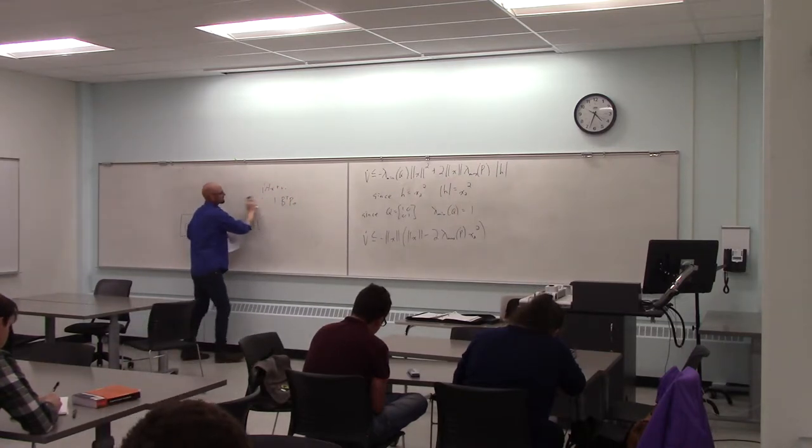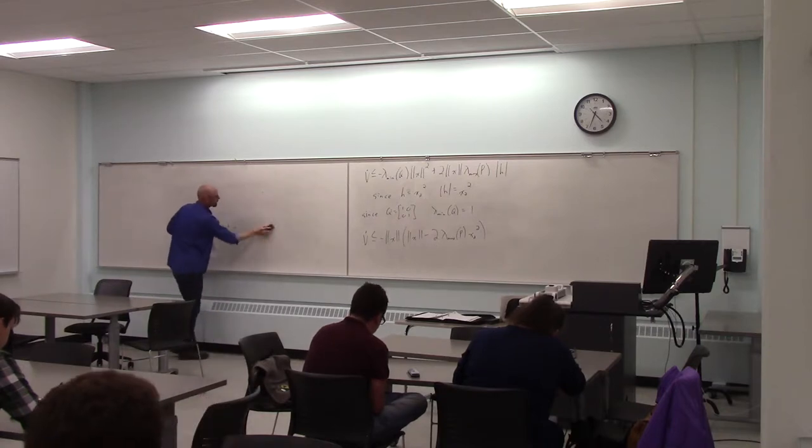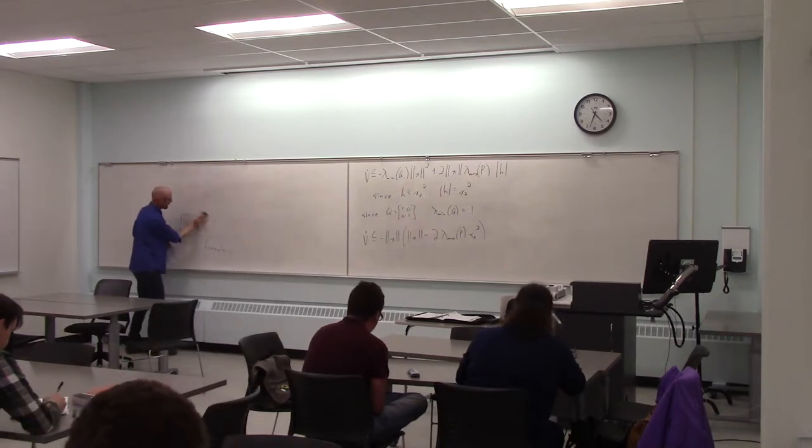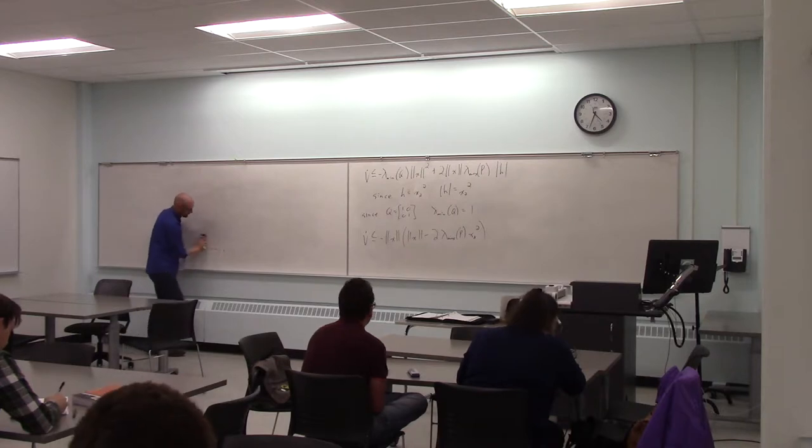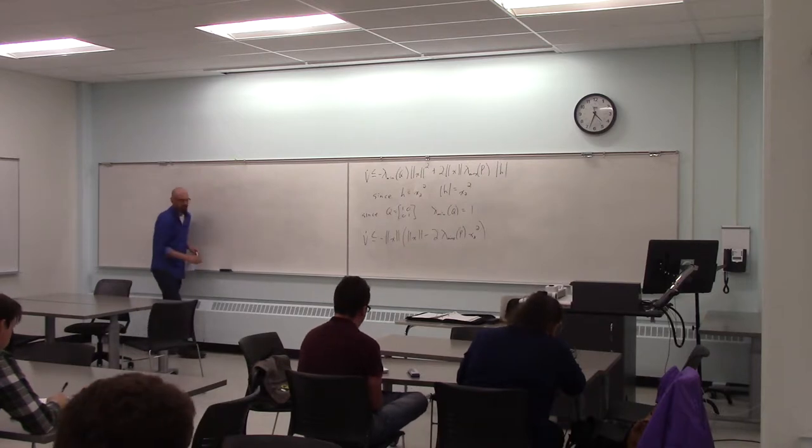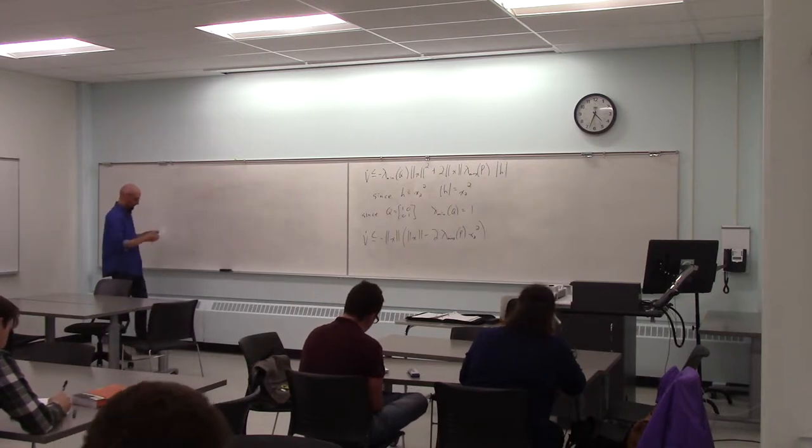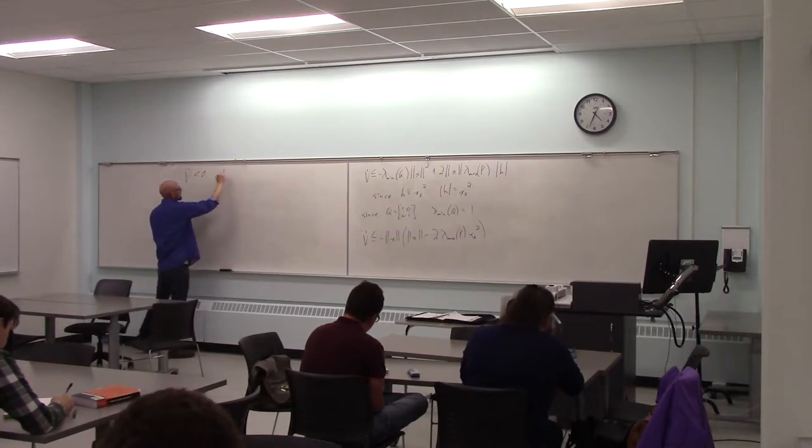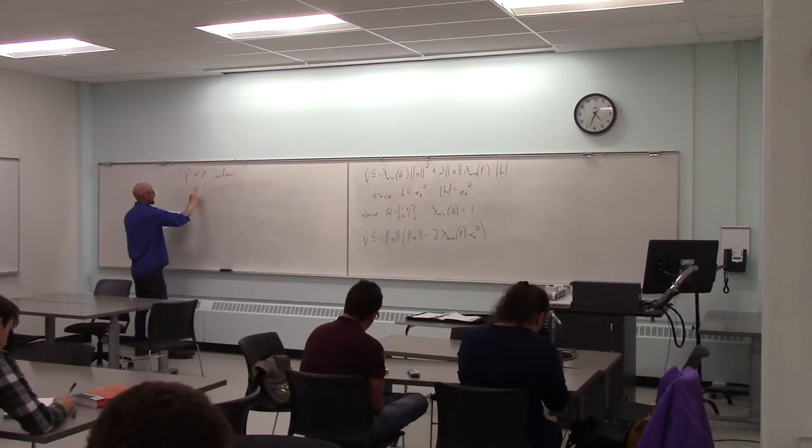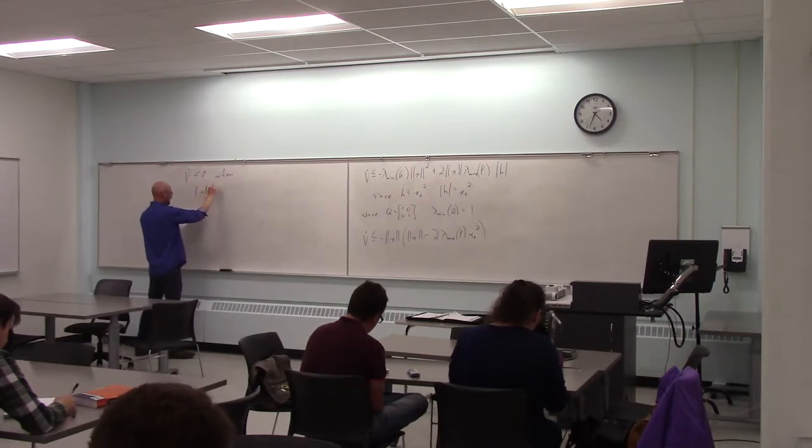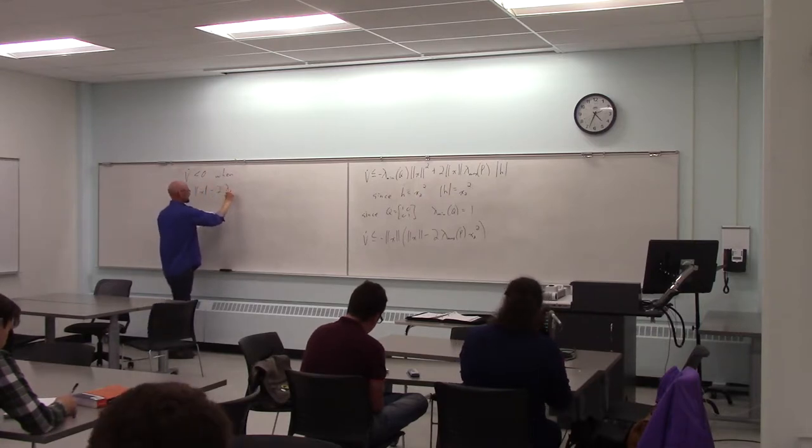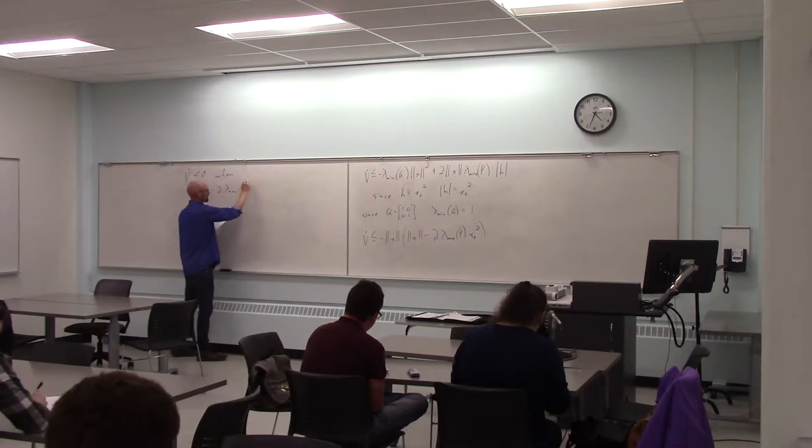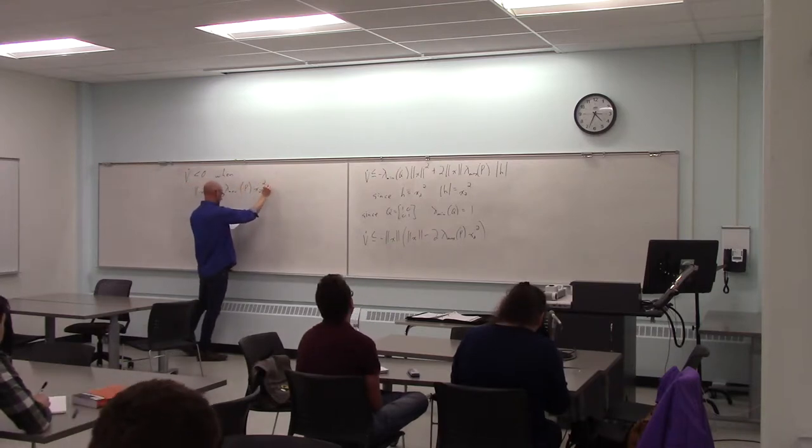So what I'm interested in is where is v dot less than 0? If v dot is less than 0, v cannot increase. So that's kind of my region of stability. So v dot is less than 0 when the norm of x minus 2 times the maximum eigenvalue of p times x2 squared is greater than 0.